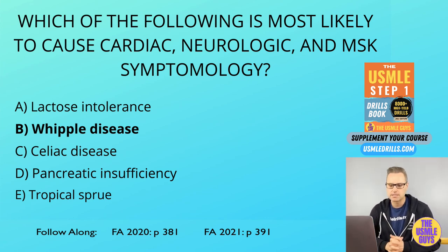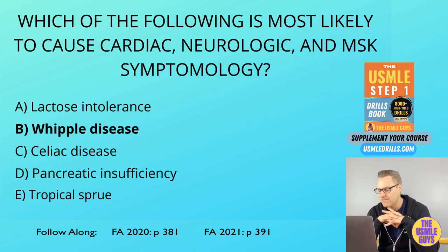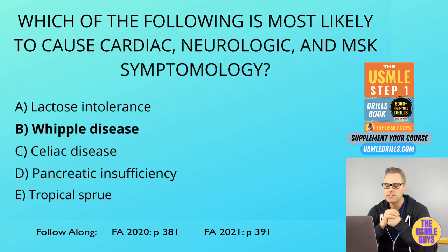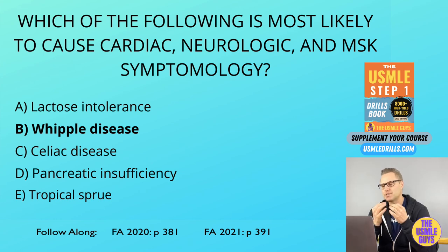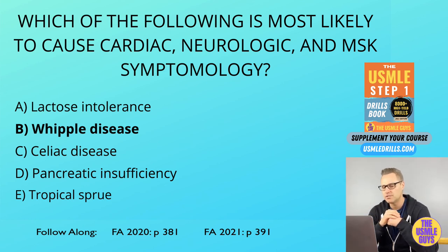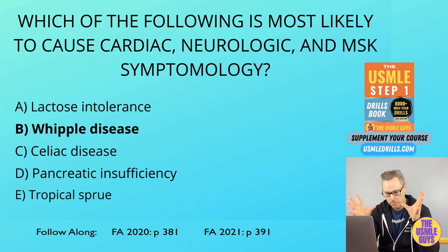Whipple disease is caused by Tropheryma whipplei infections and is characterized by cardiac, neurological, and musculoskeletal symptoms, mainly in the form of arthralgias. You want to look for the mention of PAS-positive foamy macrophages in the intestinal lamina propria — that's often a clue given in a vignette that is screaming Whipple disease.